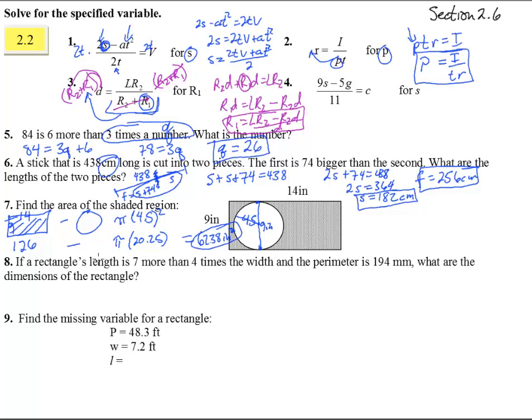Number 8, a rectangle's length is 7 more than 4 times the width and the perimeter is 194. So if we write this out, it says length is 7 more than 4 times the width and the perimeter. Now, do we remember the formula for perimeter? That's 2L plus 2W. And so we're going to take this length right here and stick it in there. So we actually get 194, that's P, equals 2L, right there, 4W plus 7, plus 2W.